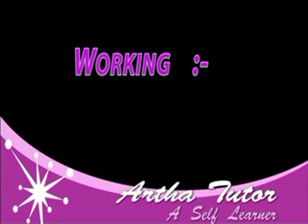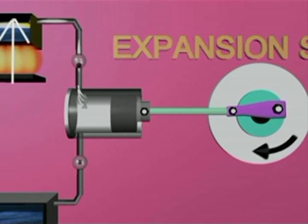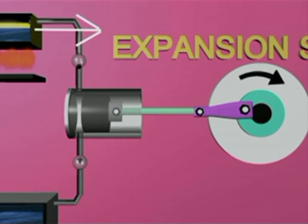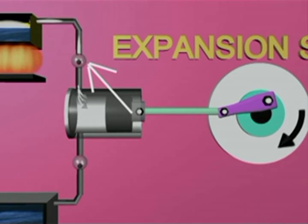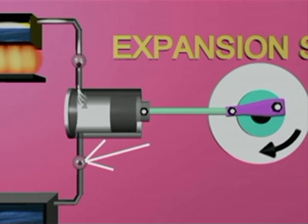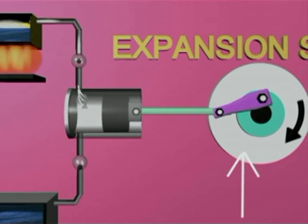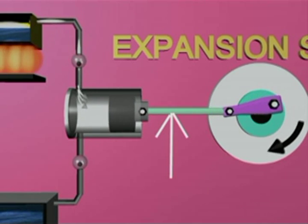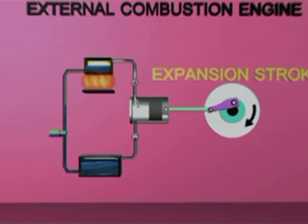The working of the external combustion engine has two steps or two strokes: expansion stroke and exhaust stroke. When water is heated in the boiler and the steam produced builds up pressure, this steam enters through the inlet valve. During this condition, the inlet valve remains open and the outlet valve remains closed. The steam expands in the cylinder pushing the piston outwards. The crankshaft starts rotating as it is connected by a connecting rod to the piston. This outward movement of the piston due to the expansion of steam is called the expansion stroke.